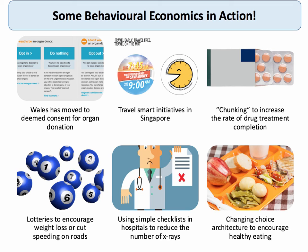In hospitals, the cost of x-rays is quite high and there are risks involved as well. So instead of the automatic default being to send somebody for an x-ray when there's a fear of, for example, a broken ankle, many hospitals are now using simple five-point checklists — five-point heuristics — to reduce the volume of x-rays and therefore reduce delays.